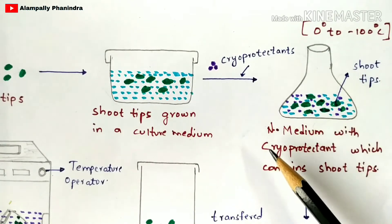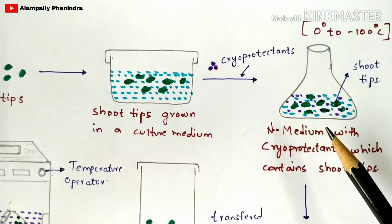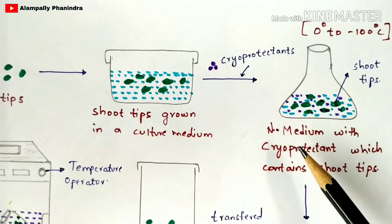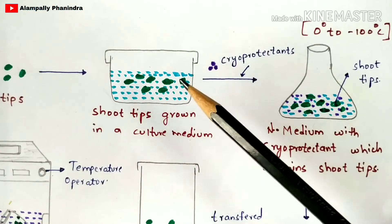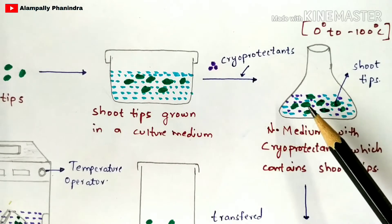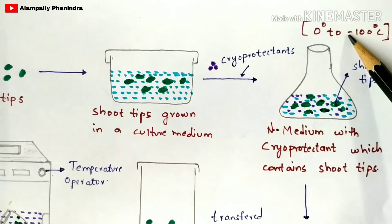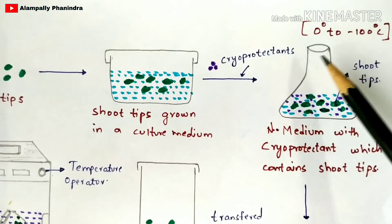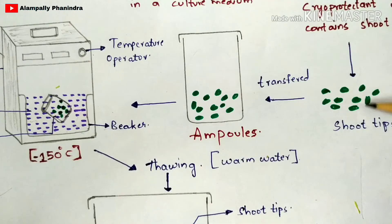Now you are going to add cryoprotectants. Cryoprotectants include, for example, glycerol, ethylene, sucrose, glucose, and dimethyl sulfoxide. You have to add these cryoprotectants into the test tube along with the culture medium and shoot tips. Then you have to maintain this test tube at a temperature of zero degrees Celsius to minus 100 degrees Celsius.